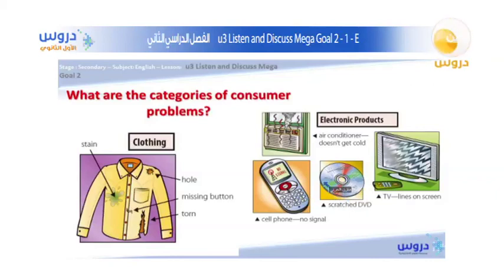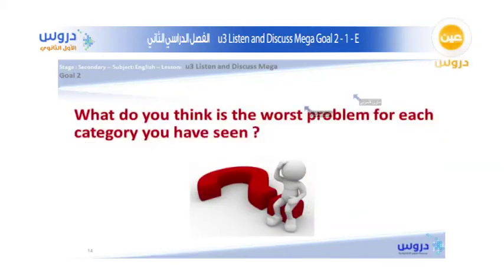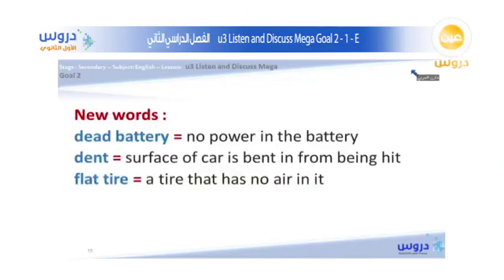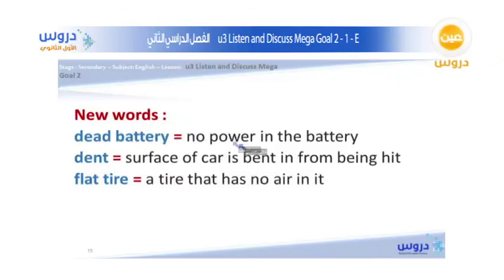New words to learn: 'Dead battery' means no power in the battery and it cannot be used. 'Dent' means the surface of a car is bent in from being hit. 'Flat tire' means a tire that has no air in it and needs to be replaced.